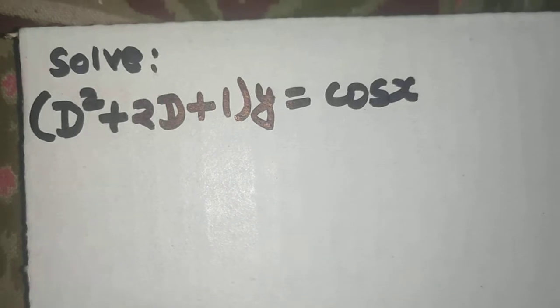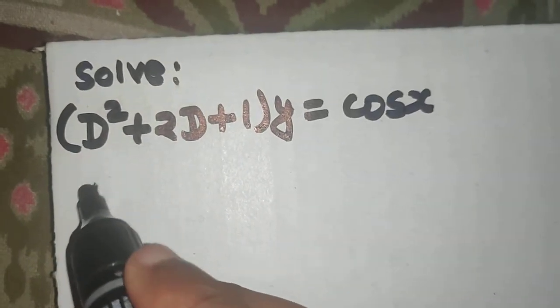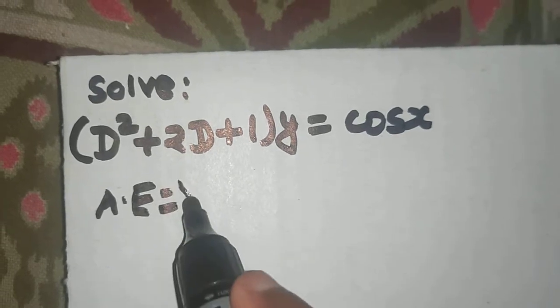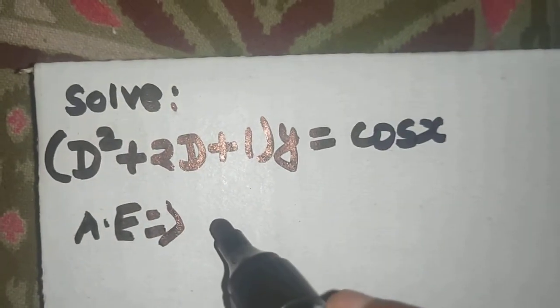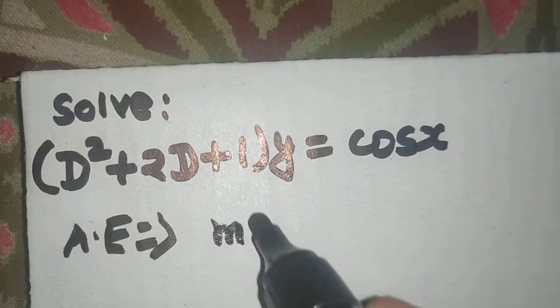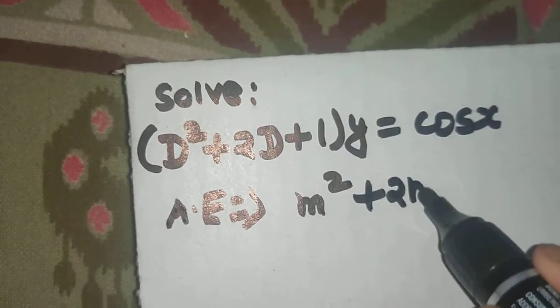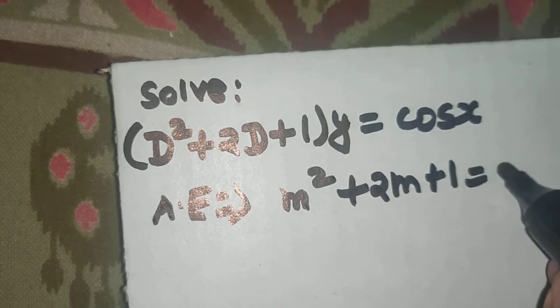First step always is to find the auxiliary equation. So for finding auxiliary equation, just replace d by m. So you will get m square plus 2m plus 1 equals to 0.